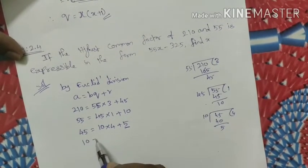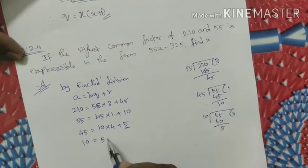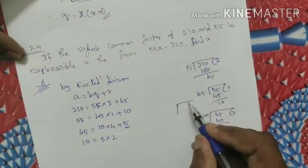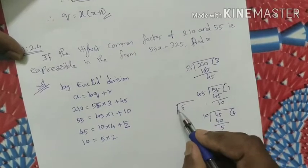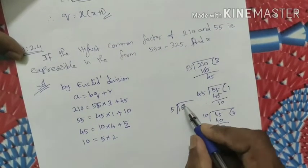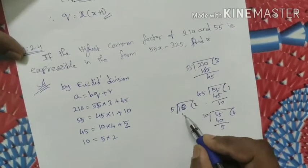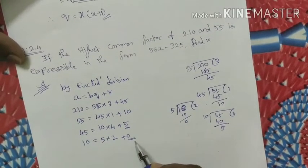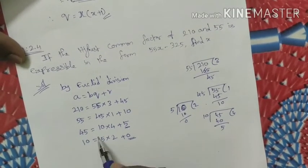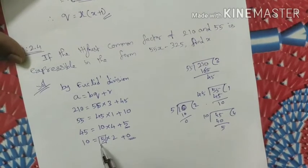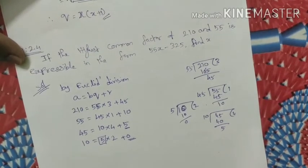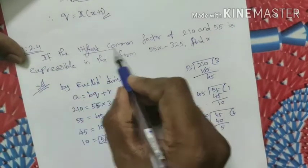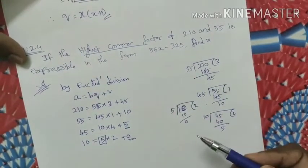Now 10 divided by 5: how many times does 5 go into 10? 2 times. 2 times 5 is 10, so the remainder becomes 0. When the remainder becomes 0, the divisor at that step is the highest common factor. So the HCF of 210 and 55 is 5. This is the procedure.